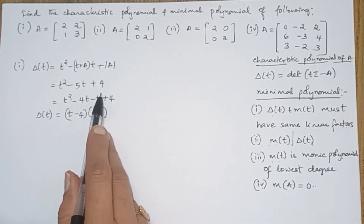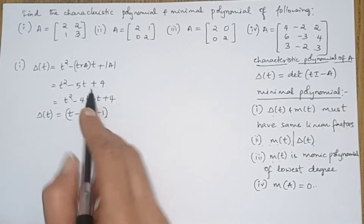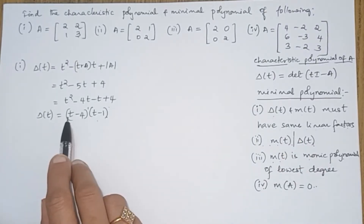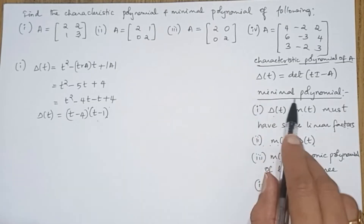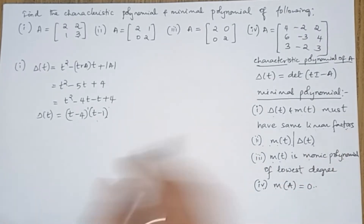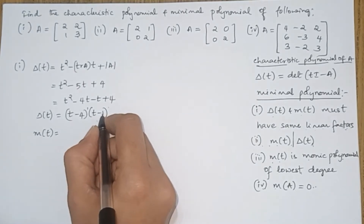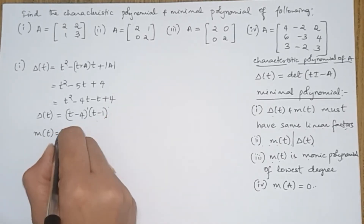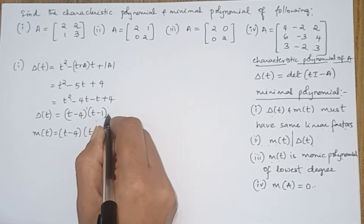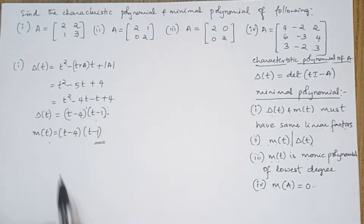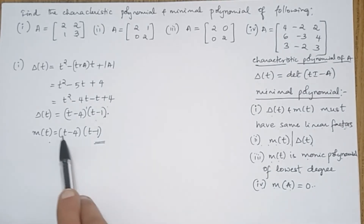Now look at the factors of the characteristic polynomial. These factors are linear, meaning the power of each factor is 1. To find the minimal polynomial, the first condition says delta(T) and M(T) must have the same linear factors, which are (T minus 4)(T minus 1). Since the characteristic polynomial contains only linear factors, in this case delta(T) equals M(T), which is the same as the characteristic polynomial, and all other conditions are automatically satisfied.